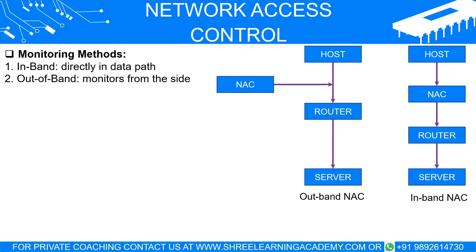Monitoring methods — in-band or out-of-band? In-band: your NAC is directly in the path of the network traffic, like a security checkpoint at an airport, so all data has to pass through it. Out-of-band: NAC monitors the network traffic from the side, more like a security camera — it's not directly in the path but can still enforce rules.